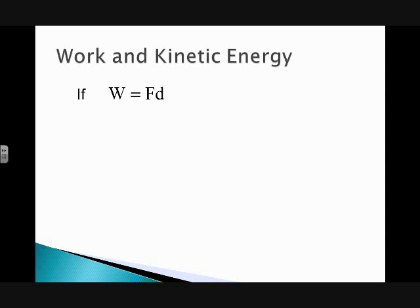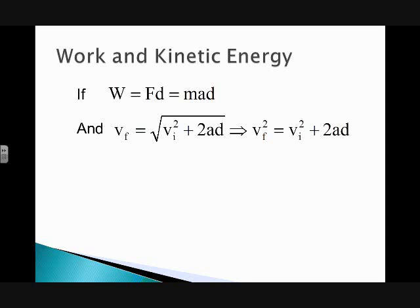Basically, it starts with the idea that work is force times displacement. From Newton's second law, we know force is equal to ma, so work is mad. Taking another kinematic equation where we have our final velocity is equal to the square root of initial velocity squared plus 2ad, we can rearrange and rewrite this equation. Squaring both sides, we get this expression right here: VF squared is equal to VI squared plus 2AD. I'm going to rearrange that equation and solve for AD right here.